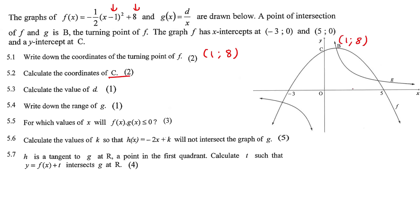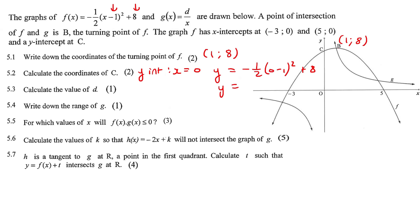Calculate the coordinates of c. C is the y-intercept, so to find a y-intercept we make x equal to 0. Plugging in 0 for x gives us 15 over 2. So c is (0, 15/2).